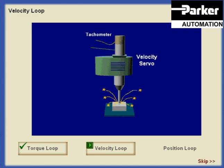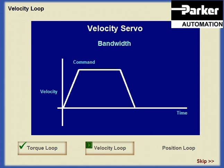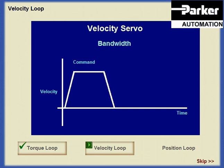The accuracy requirements of speed regulation vary widely in velocity servo applications, ranging from machine tool spindle drives and computer disk drives to material feeders and conveyor belts. Many applications require a rapid motor response to a fluctuating control signal. A servo system's ability to follow rapidly changing command signals is referred to as its bandwidth, reflecting its maximum rate of response.